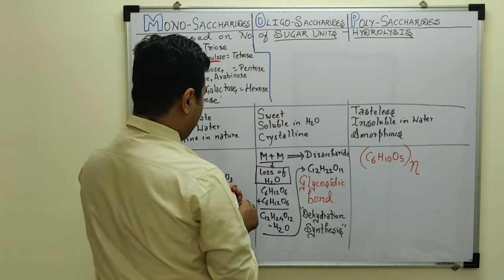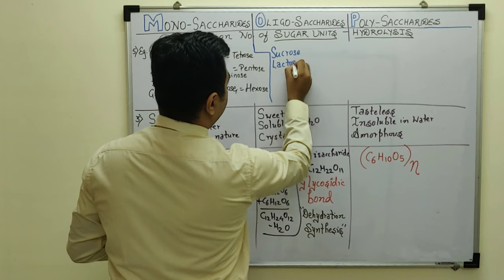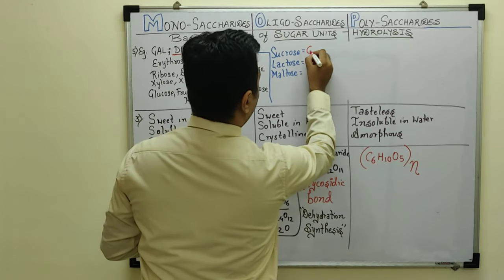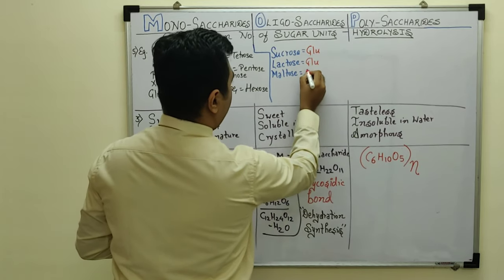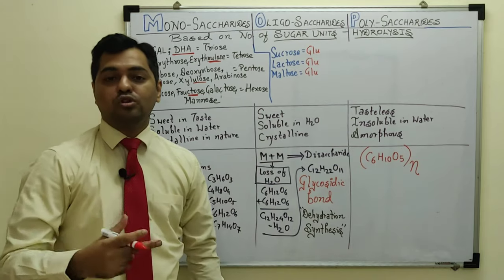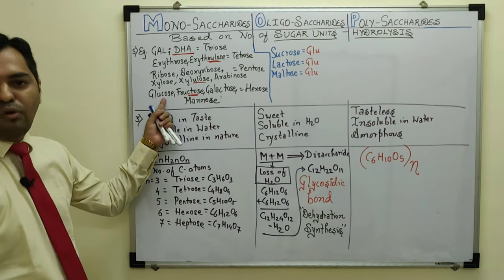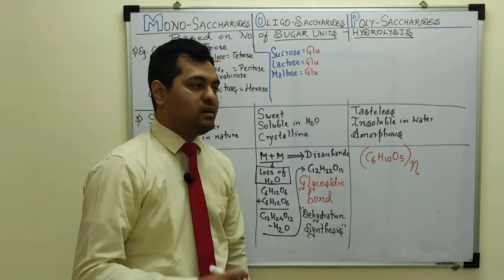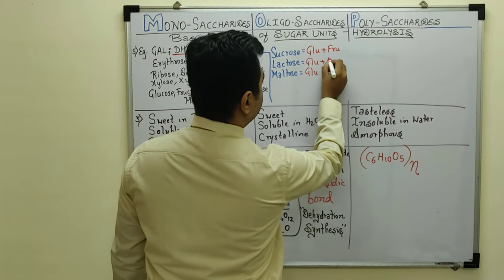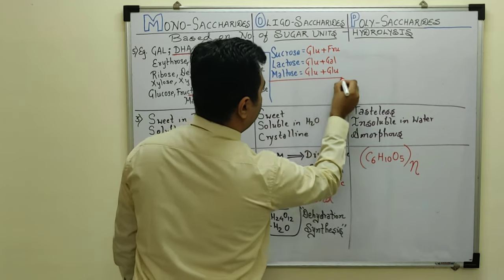For oligosaccharide examples: the most important disaccharides are sucrose, lactose, and maltose. Sucrose is formed from glucose + fructose. Lactose is formed from glucose + galactose. Maltose is formed from glucose + glucose. This shows that glucose, a hexose sugar, is one of the most abundant monosaccharides — produced mainly by plants during photosynthesis and stored as starch.